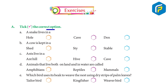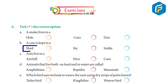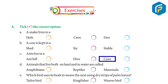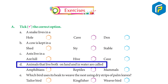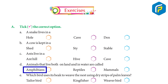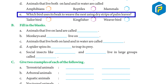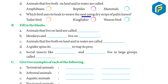Exercise Part A — Tick the correct option. A: A snake lives in a hole (answer: hole). B: A cow is kept in a shed (answer: shed). C: Ants live in an anthill (answer: anthill). D: Animals that live both on land and in water are called amphibians (answer: amphibians). E: Which bird uses its beak to weave a nest using dry strips of palm leaves? Answer: weaver bird.